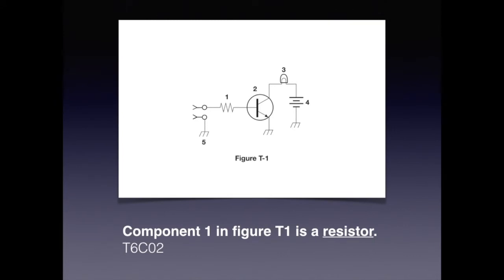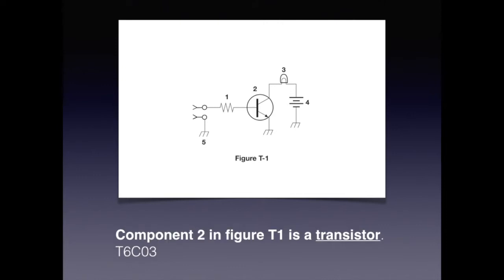In Figure T1, there are various components. Number 1 is a resistor. Number 2 is a transistor. Number 3 is a lamp. Number 4 is a battery. Number 5 is the symbol for ground. For the exam, know that component 1 in Figure T1 is a resistor. Note that component 2 in Figure T1 is a transistor.